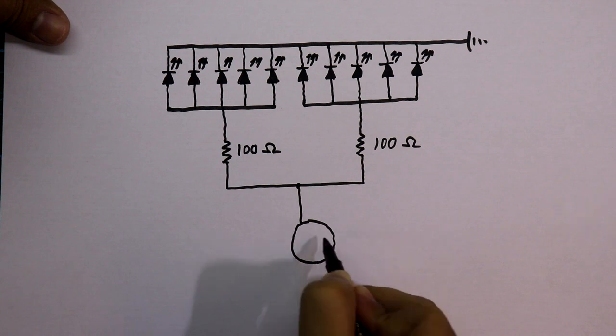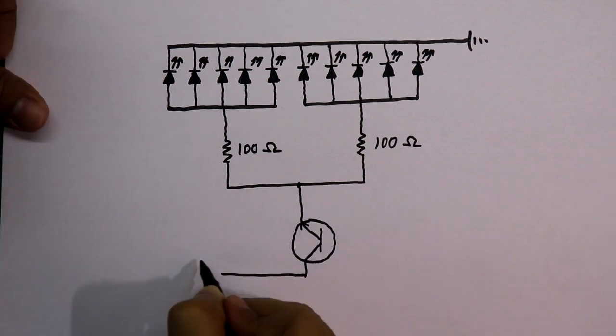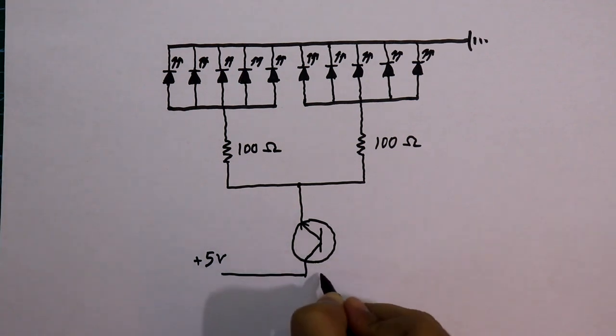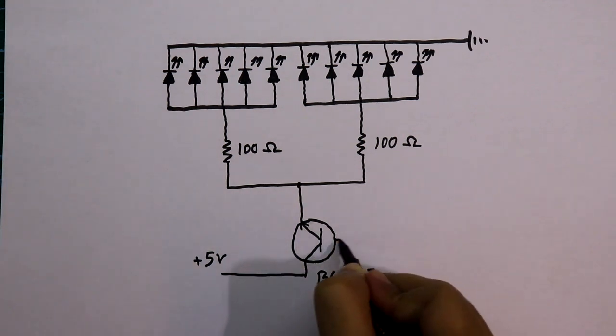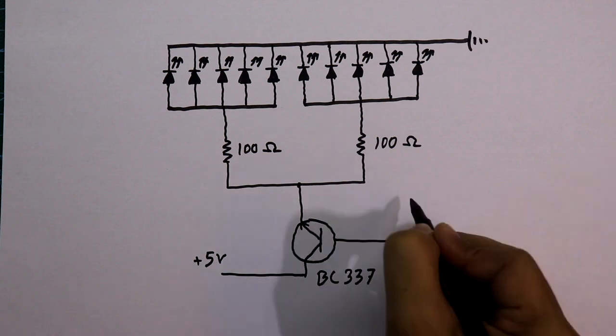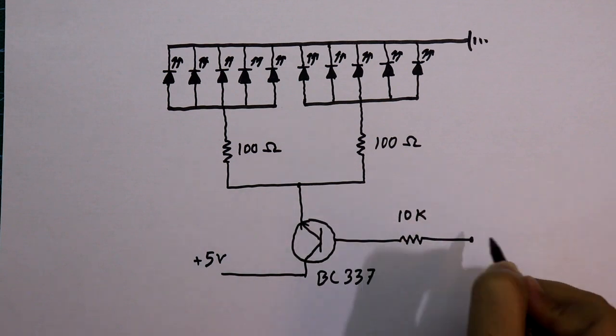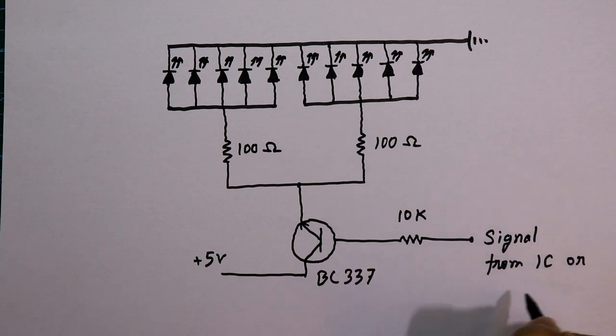And it is connected to emitter of a transistor. The collector of the transistor is connected to plus 5 volt. This one is BC337 and base of the transistor is connected to 10 kilo ohms resistor. And in the other side of the resistor we will provide the signal from the IC or microcontrollers.